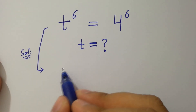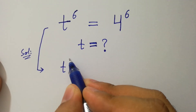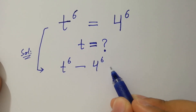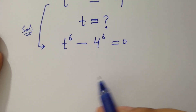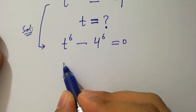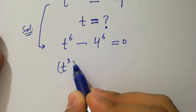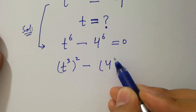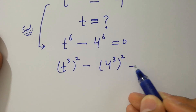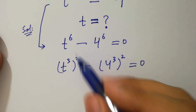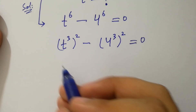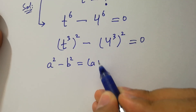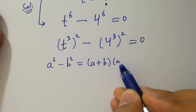It can be written as t to the power 6 minus 4 to the power 6 equals 0. Which is the same as t to the power 3, to the whole power 2, minus 4 to the power 3, to the whole power 2, equals 0. Since t times 2 is 6, we know the formula of a squared minus b squared equals a plus b times a minus b.